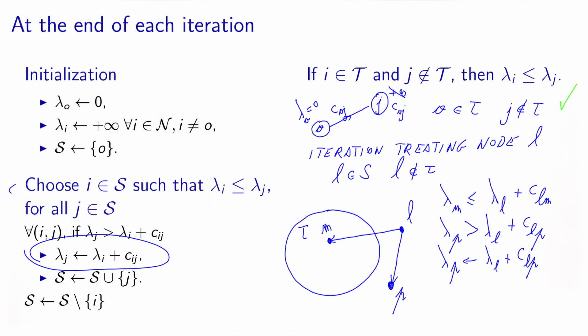Now at the end of the iteration, once we have processed all the arcs, lambda L will be moved into T. It will go out of S. And this is where the role or the choice of the label is important. Indeed, because we have chosen lambda L to have the smallest label amongst everything which is not in T, once it goes into T, well, it will be less or equal to any value out of T, which proves the result.